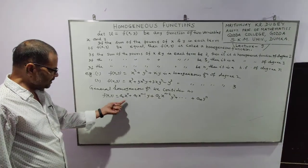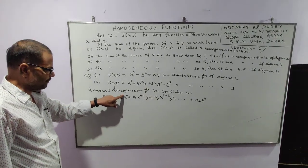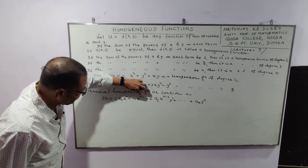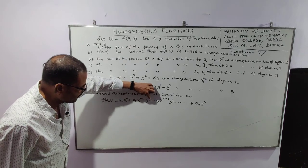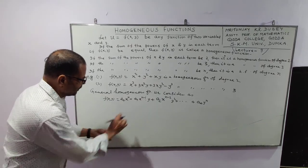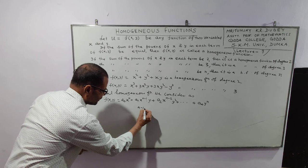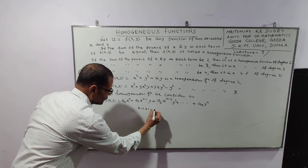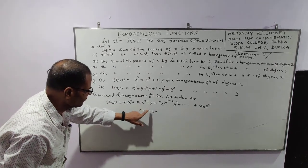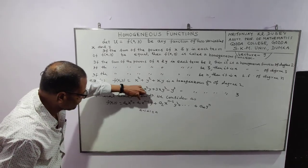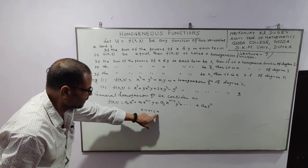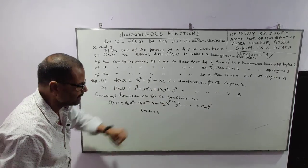In the first term, we see x to the power n. In the second term, x to the power n minus 1, multiplied by y to the power 1. So n minus 1 plus 1 is equal to n. This means the second term has x and y variables with combined power n. In the third term, x to the power n minus 2 multiplied by y squared, giving n minus 2 plus 2 equals n.